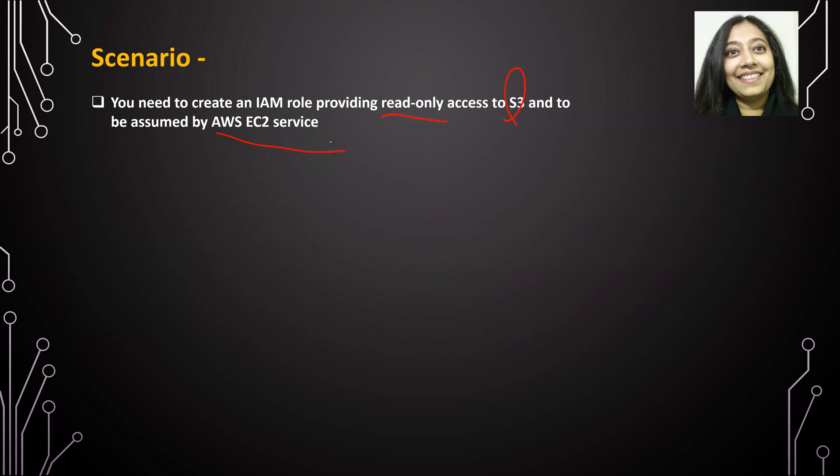The scenario is pretty straightforward. We need to create a role that provides read-only permissions to S3, and this role will be assumed or used by the AWS EC2 service. We will basically be creating or launching an EC2 instance and then associating this role to that particular instance while we launch it.